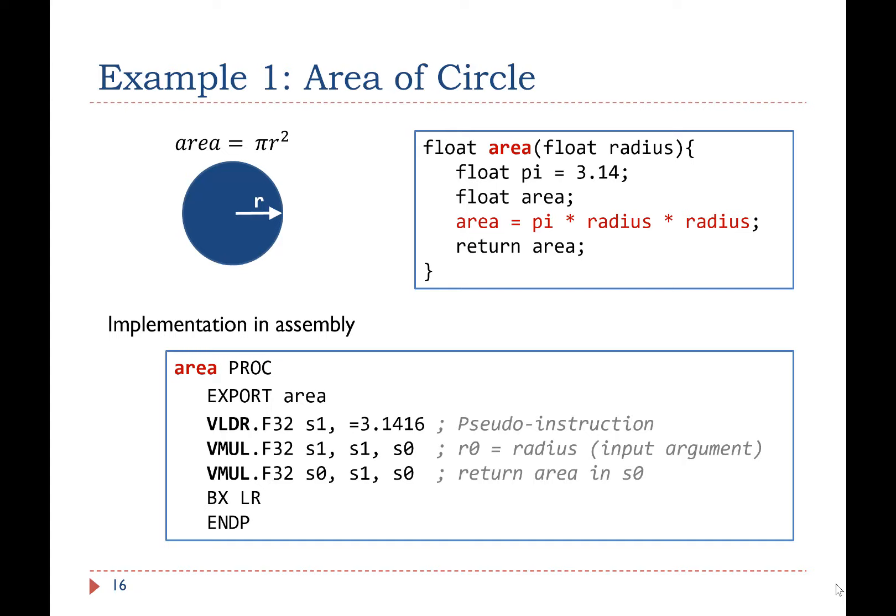Let me give you an example to show how arguments are passed. This C function calculates the area of a circle. It takes one float argument named radius. In the equivalent assembly implementation, the input argument radius is passed in the single-precision register S0. The result is also returned to the caller in S0. The assembly program uses a VLDR instruction to initialize S1, and then two multiplication instructions to calculate the area. The result is saved and returned in S0.